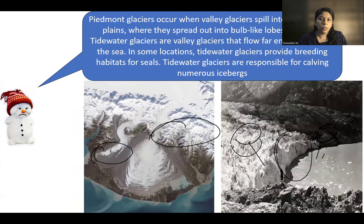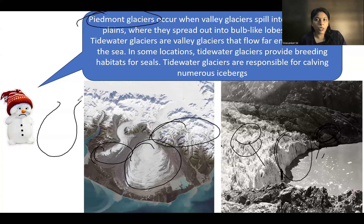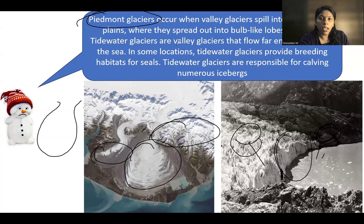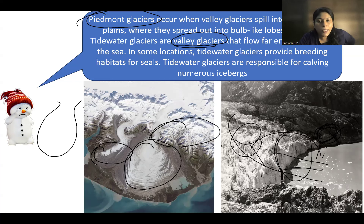Next are piedmont glaciers, which form bulb-like lobes at the base of mountains. A related term is tidewater glacier — these are valley glaciers that extend and reach the sea. When a valley glacier reaches the sea, we call it a tidewater glacier. Tidewater glaciers produce numerous small icebergs as chunks of ice split and segregate and float over the water.